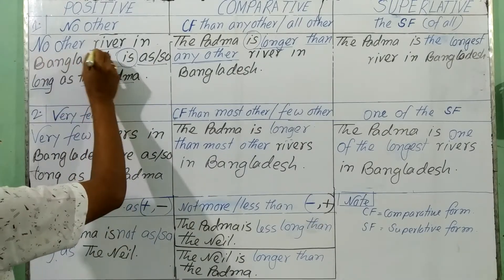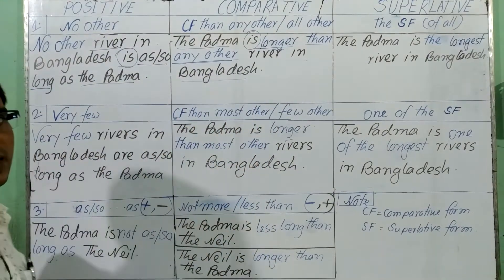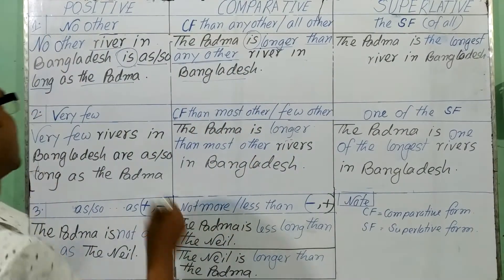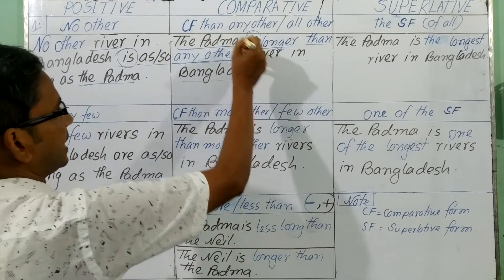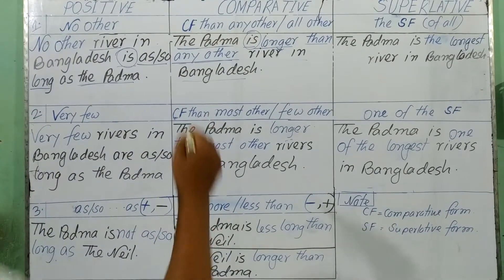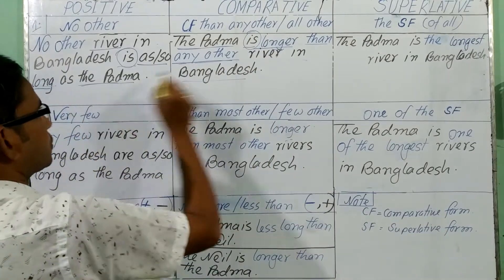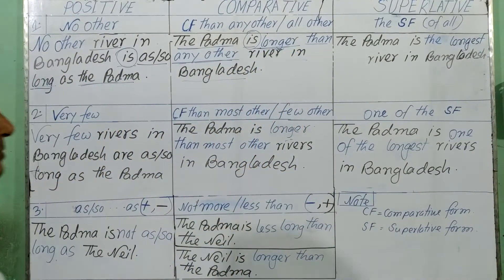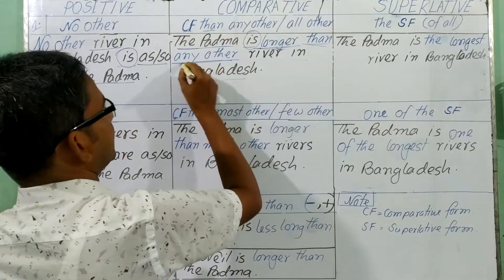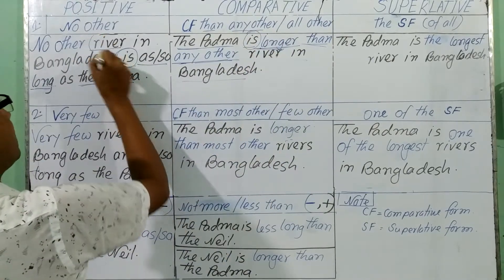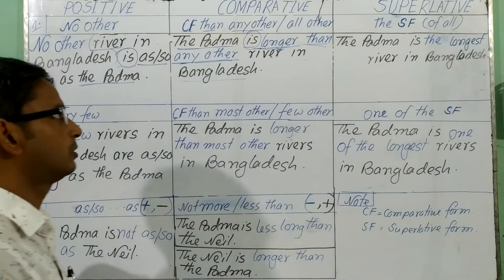So you will have to write 'rivers in Bangladesh.' You will write the subject, then the verb, then go to the rules directly. CF means comparative form of the adjective. 'Long' is the adjective, so you write the comparative form — 'longer' — then 'than any other,' then the rest of the sentence. So the Padma is longer than any other river in Bangladesh.